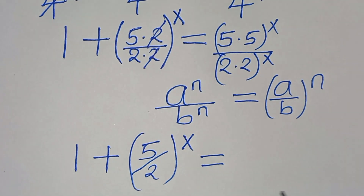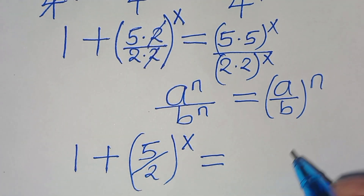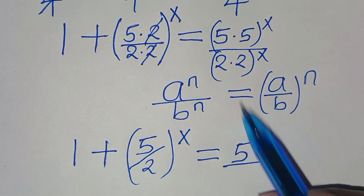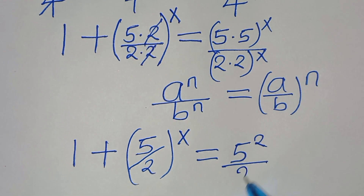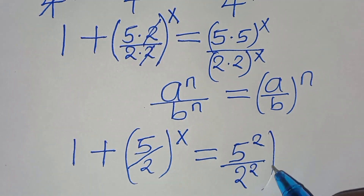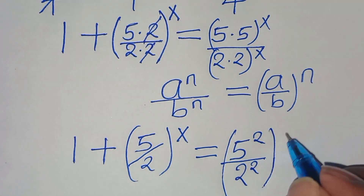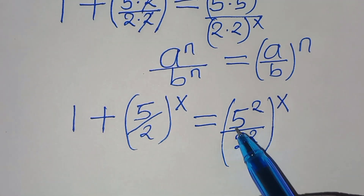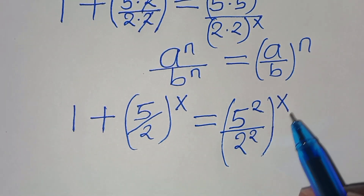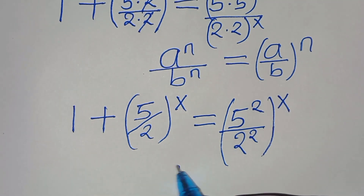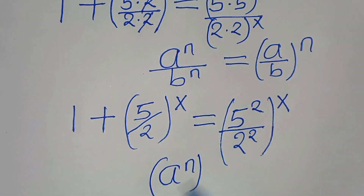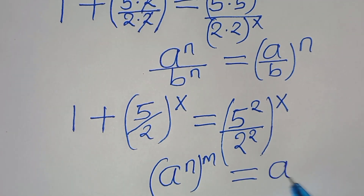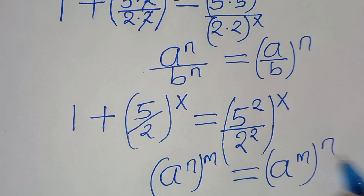This equals 5 times 5, which is 5 to the power of 2, divided by 2 times 2, which is 2 to the power of 2, everything raised to the power of x. Then 5² and 2² raised to the power of x is in the form (a^n)^m, which can be expressed as (a^m)^n. Applying this exponent property: